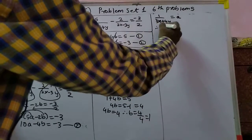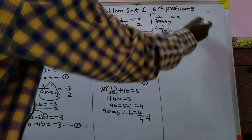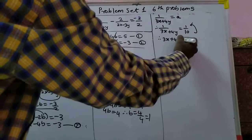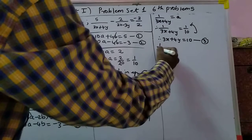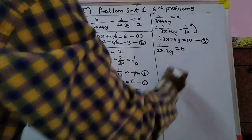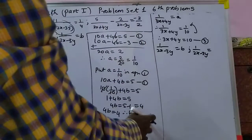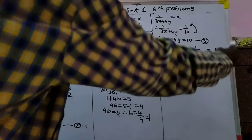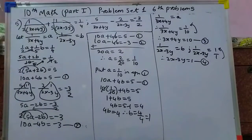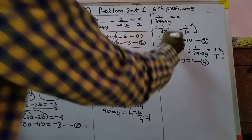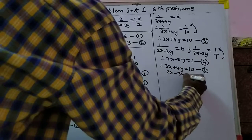Back-substituting: 1 upon 3x plus 4y equals a equals 1 by 10. Interchanging: 3x plus 4y equals 10, equation 3. And 1 upon 2x minus 3y equals b equals 1. Interchanging: 2x minus 3y equals 1, equation 4. So now we have two equations: 3x plus 4y equals 10, equation 3, and 2x minus 3y equals 1, equation 4.